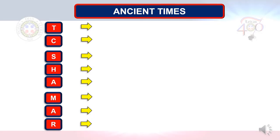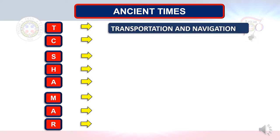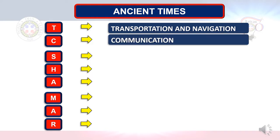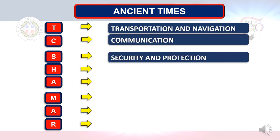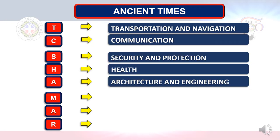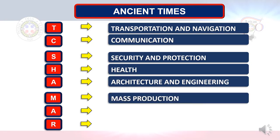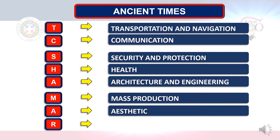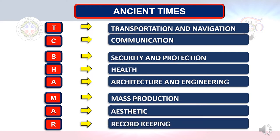For now, we'll be talking about the most encountered problems during ancient times. Just remember the acronym T.C. Shamar: T stands for Transportation and Navigation, C stands for Communication, S stands for Security and Protection, H stands for Health, A stands for Architecture and Engineering, M stands for Mass Production, A stands for Aesthetic, and R stands for Record-Keeping.